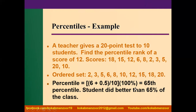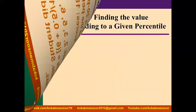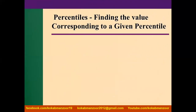Multiplying by 100 percent gives us 65th percentile. This means if a student scored 12 in this test, he or she is better than 65 percent of the entire class. This is how we calculate the percentile.